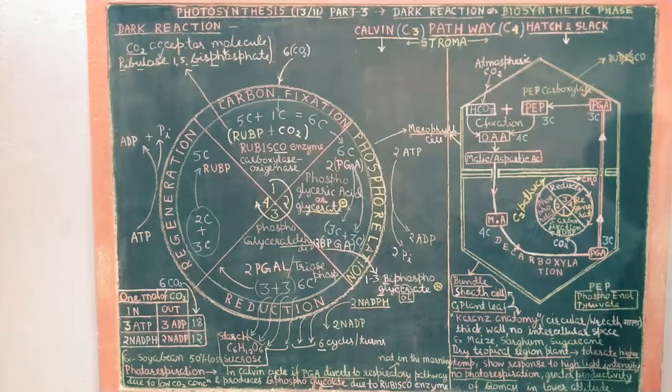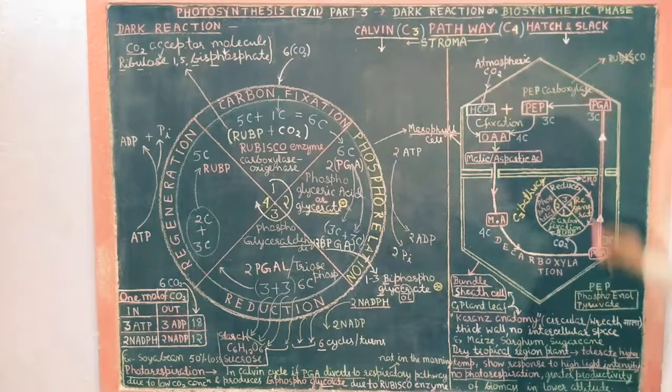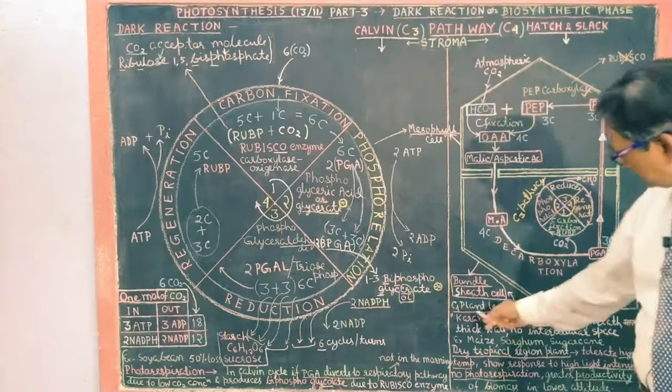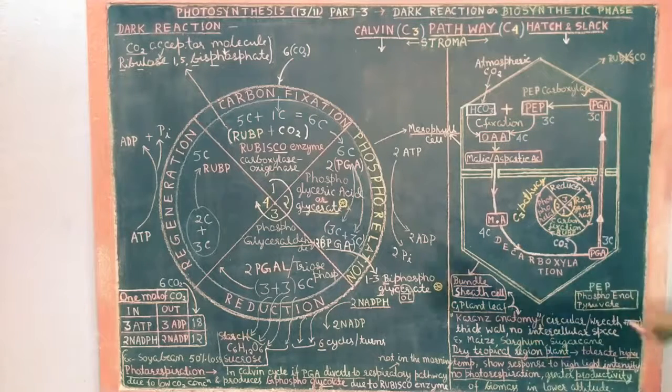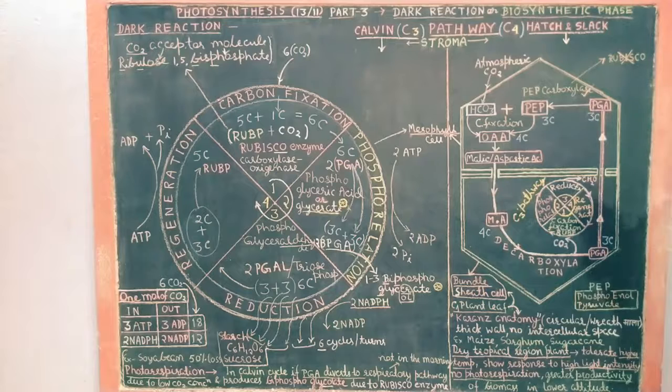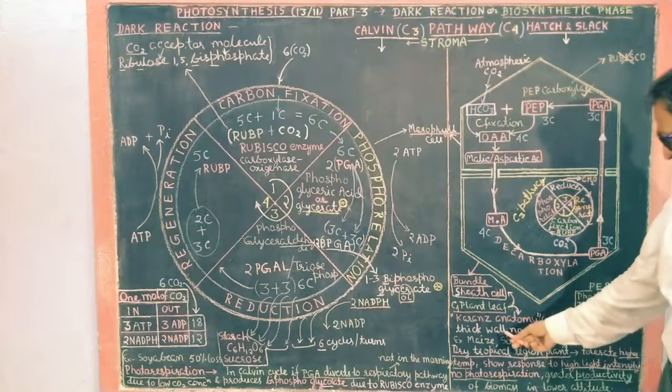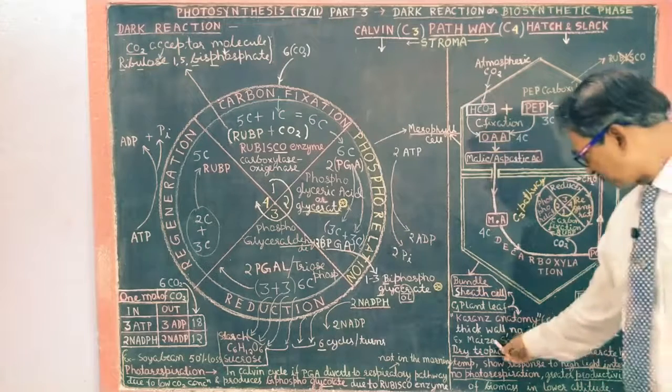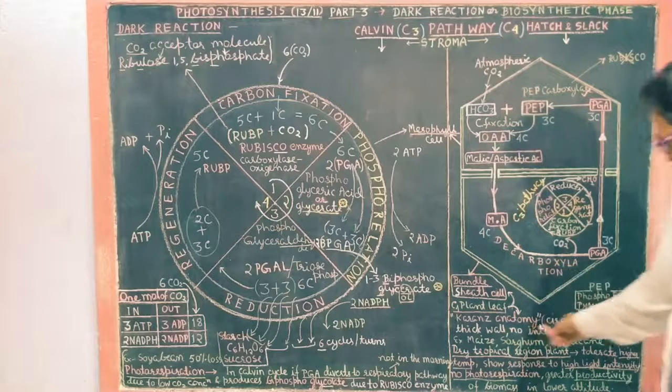Now bundle sheath, in C4 plant there is a different structure in the leaf that is called Kranz anatomy. The leaf is known as Kranz anatomy. It is found in C4 plant like maize, sorghum, and sugarcane.